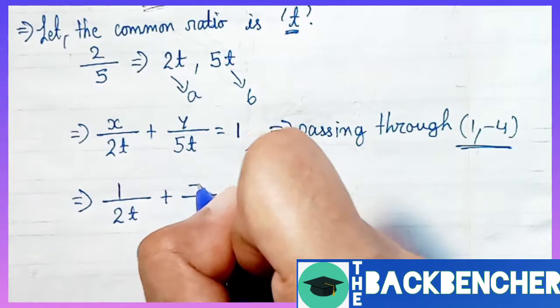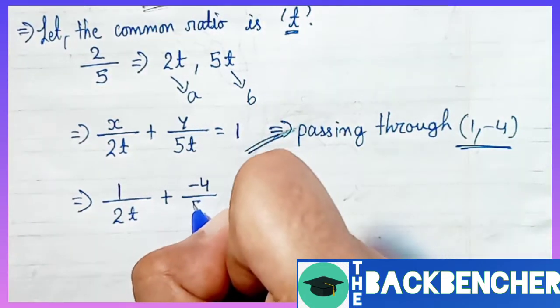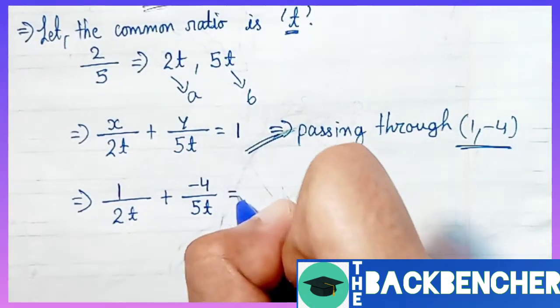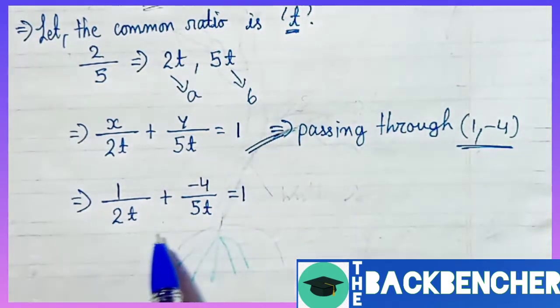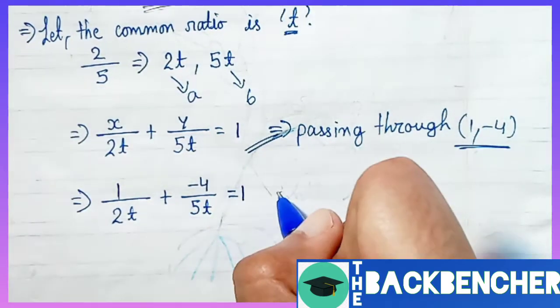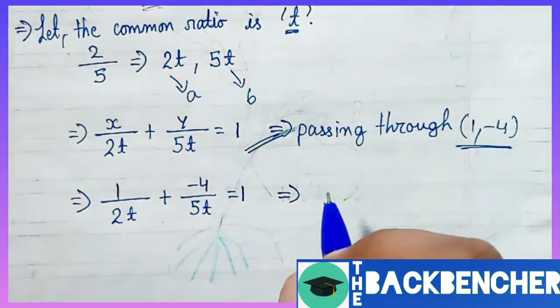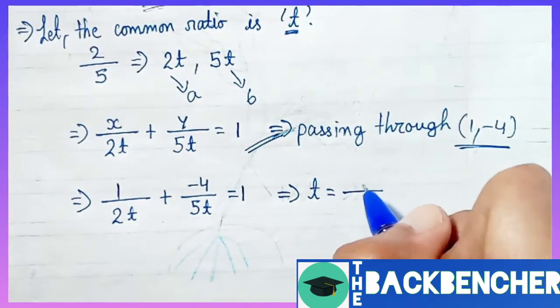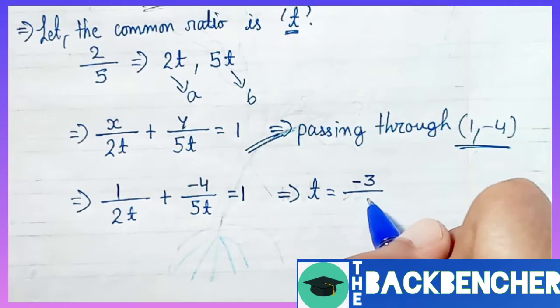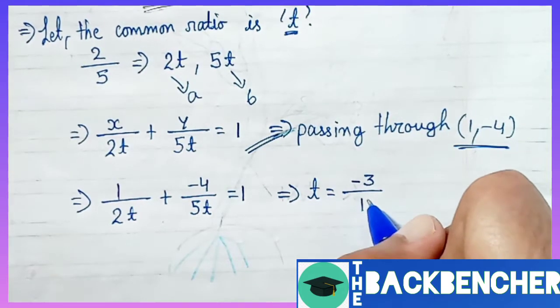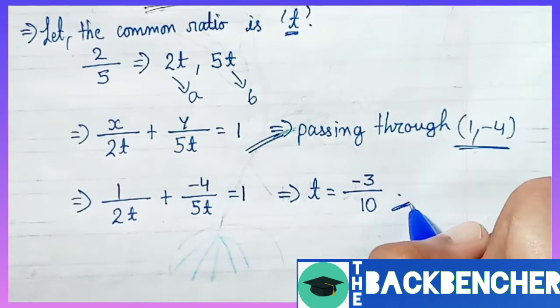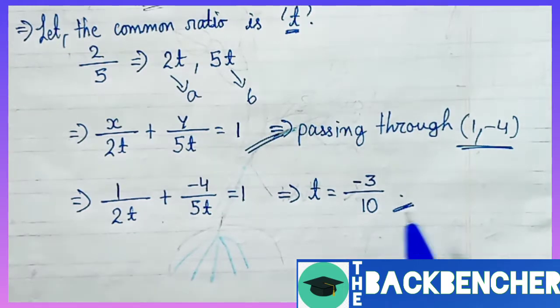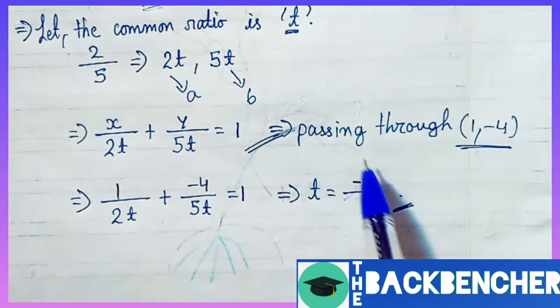If you put (1, -4) values in this equation, then it will satisfy this equation. This is the criteria when a line crosses this point. We will put x and y value in this equation - x value is 1 and y value is -4. So 1/(2t) + (-4)/(5t) = 1. We have put in the coordinates given in the question. Using that we will easily find the value of t by simplifying.